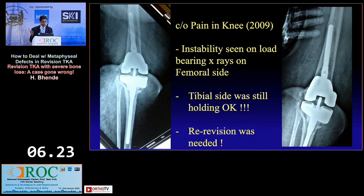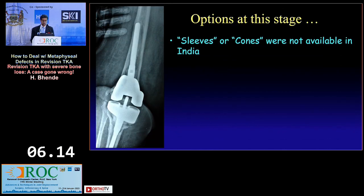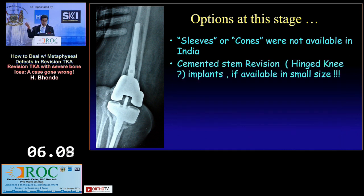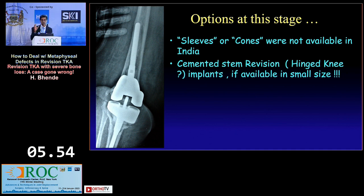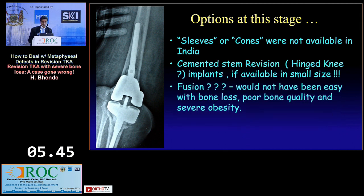Re-revision was required. We discussed with the patient — it was quite difficult. The option of sleeves and cones wasn't available to us in India at the time. The same cemented revision again, or a hinge knee, posed the problem of small size: hinge knees are designed for Caucasian anatomy, and for a small Indian patient they can be so large that it is sometimes difficult to even close the wound. Fusion was a third option, but with so much bone loss, a large obese patient, and porotic bone, that too was extremely difficult.